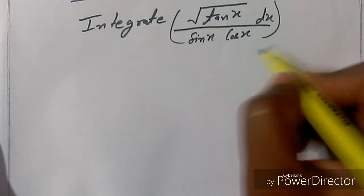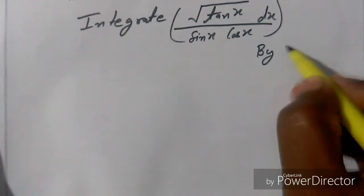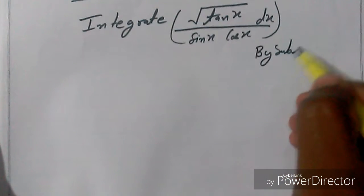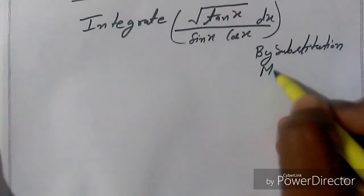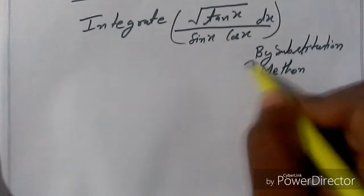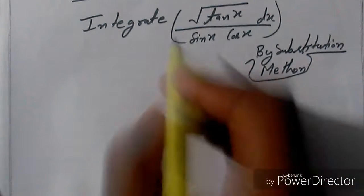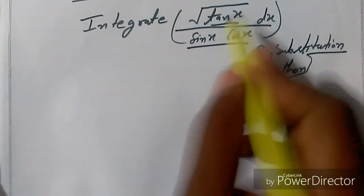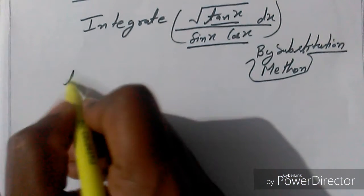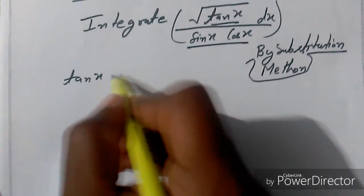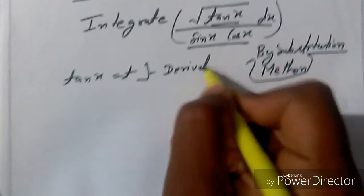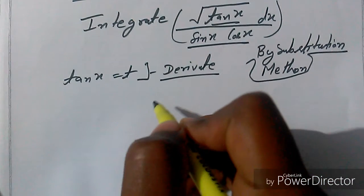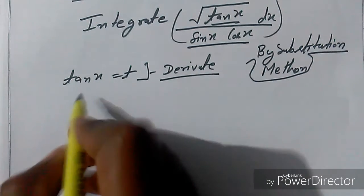We solve this by the substitution method. In this method we take t as a substitution for one function — we suppose tan(x) is equal to t. Now we differentiate it.